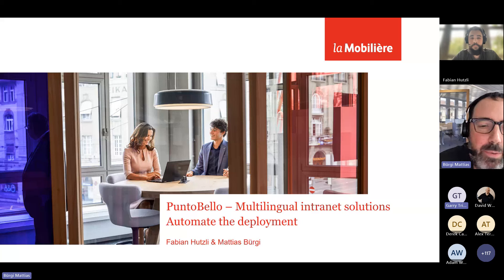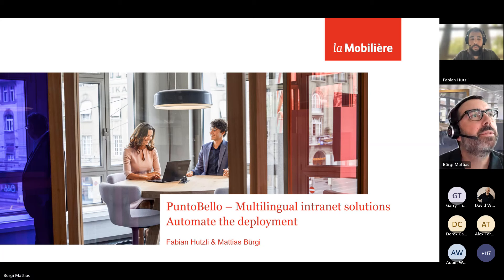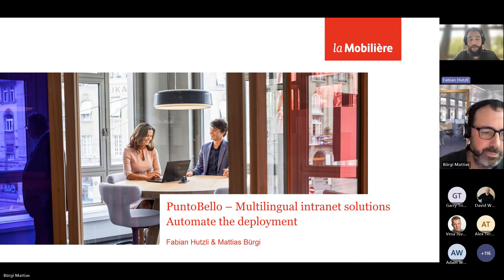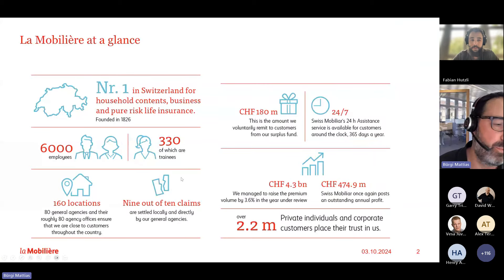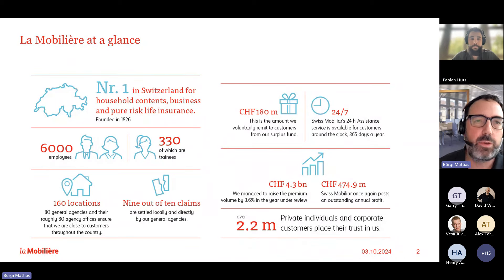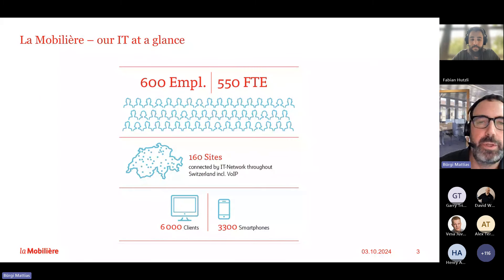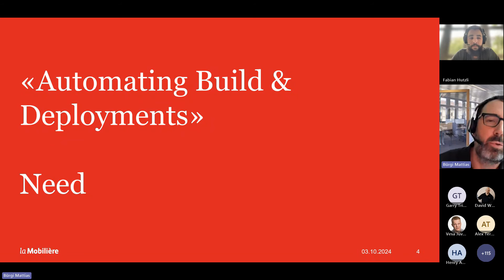My name is Matthias Burgi. I'm a DevOps engineer at La Mobilière. My name is Fabian Hutzli, and I'm also a DevOps engineer at La Mobilière by day, and I try to automate everything in my life, including my coffee breaks. We both work at La Mobilière, which was founded in Bern in 1826 and is the oldest private insurance company in Switzerland — still organized as a cooperative with around 6,000 employees, 600 of those in IT.